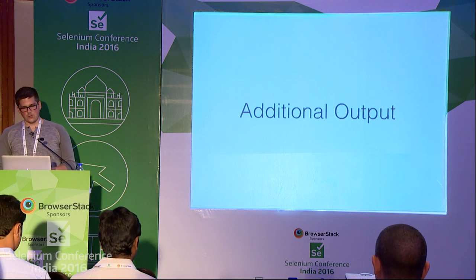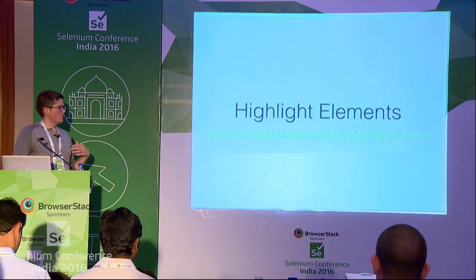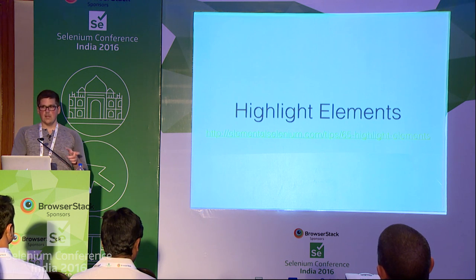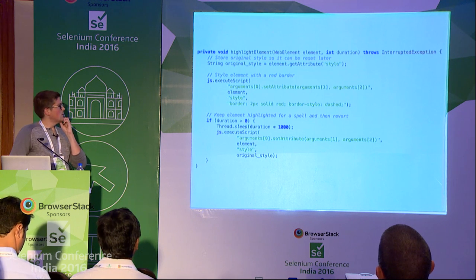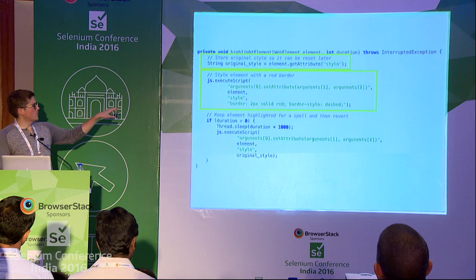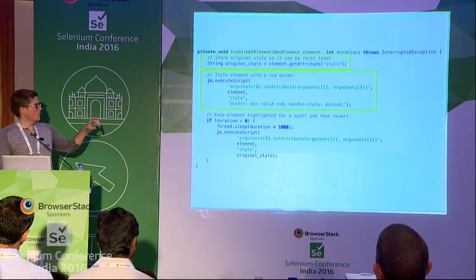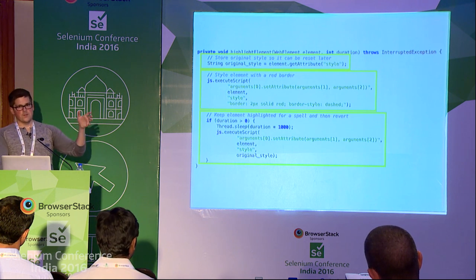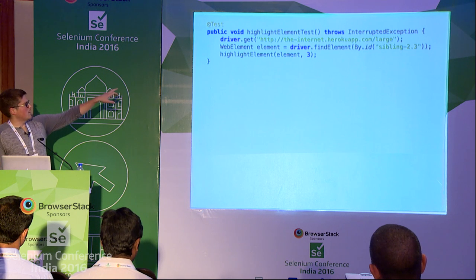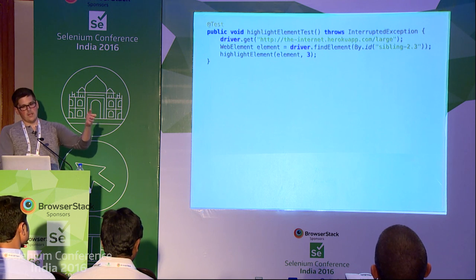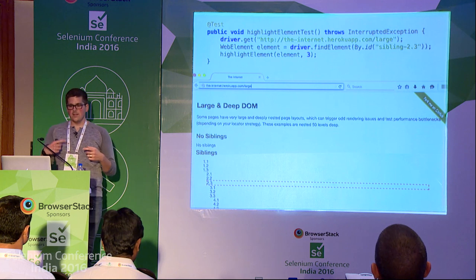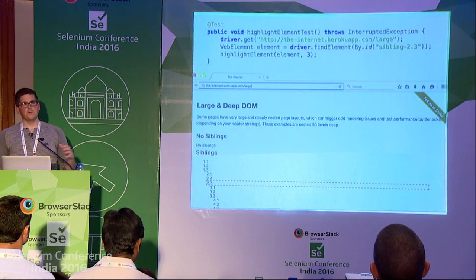Switching gears to additional output: there are some additional ways to get more debugging information out of your tests than just looking at the logs. One thing you can do is use Selenium to highlight elements on the page using JavaScript. Grab the original style out of an element, change the style — for example to a red border — then create a mechanism to keep that element highlighted for a certain amount of time, and then revert the styling back to its original state when done. In a test this looks like: call highlight element, pass the element and the amount of time you want it highlighted. In a large and deep DOM, you can see what's actually being selected.